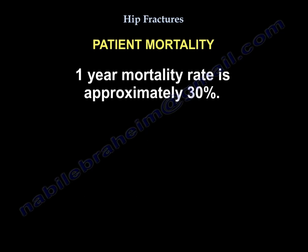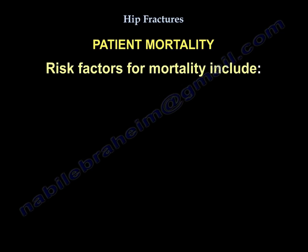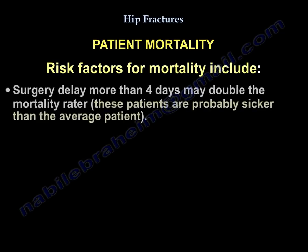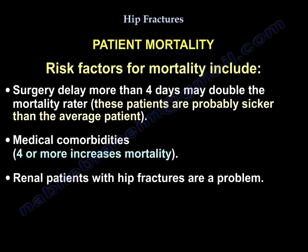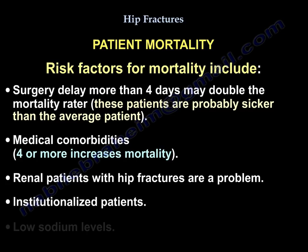The one-year mortality is 30 percent. Risk factors for mortality include surgical delay of more than 4 days, which may double the mortality rate — these patients are likely sicker than average. Having more than 4 comorbidities increases mortality. Renal patients with hip fractures are a particular problem. Institutionalized patients and those with low sodium have a higher risk of mortality.